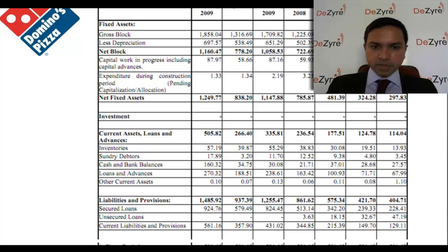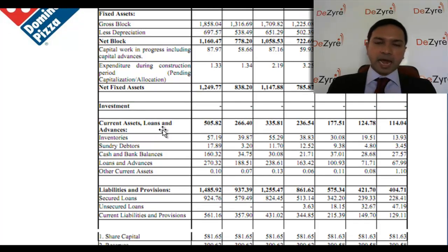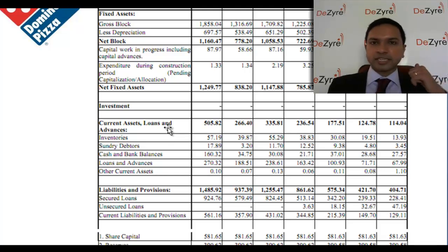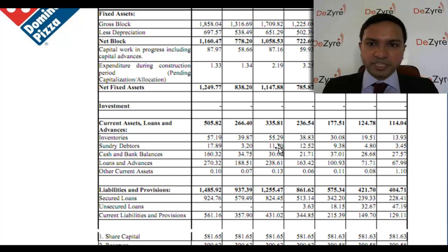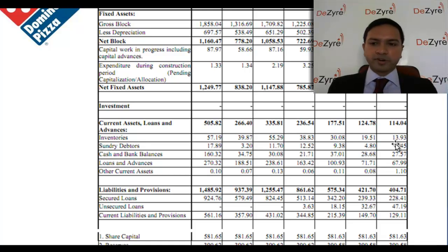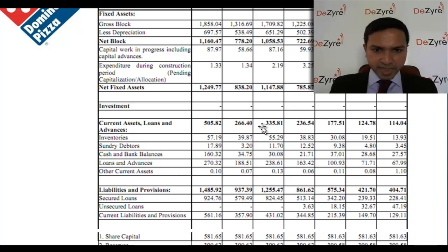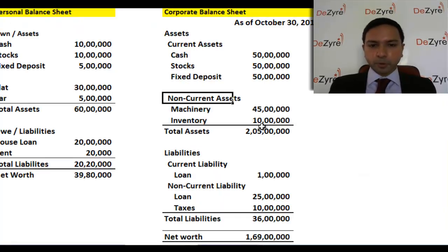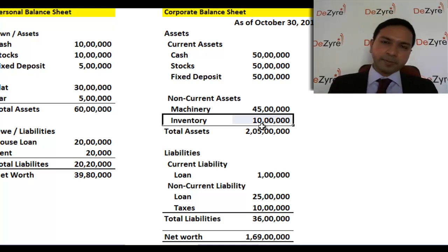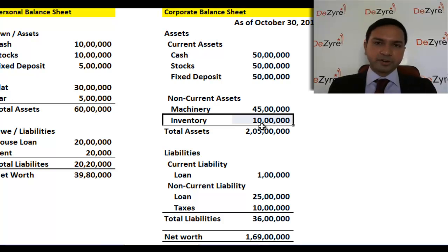Coming down to their current assets — current assets are the liquid assets, things the company can sell right now with a phone call and get cash within a day or two. Inventories, for example: Domino's probably has one to two weeks' inventory of cheese, oil, vegetables, chicken, ketchup, and all the things Domino's uses, stored in some cold storage, and that appears on your balance sheet. Note that in our simple balance sheet we put inventory under non-current assets, but that really depends on the type of company and whether it's long-term or short-term inventory.